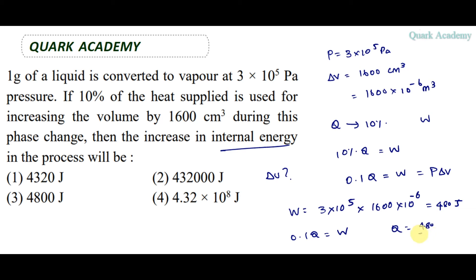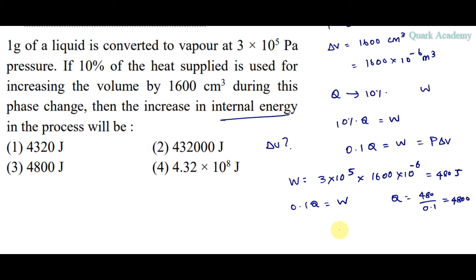480 divided by 0.1 gives 4800 joules as the total heat energy. Using the first law of thermodynamics, total heat energy equals work done plus change in internal energy.